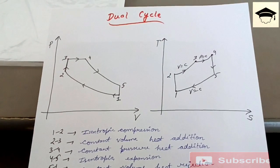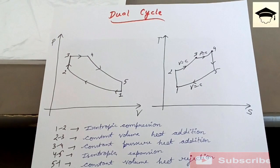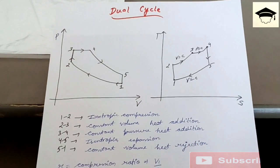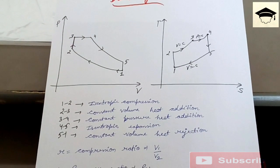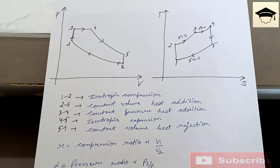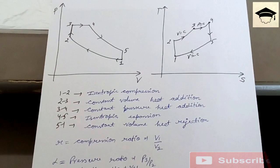From 1 to 2 it is isentropic compression process. From 2 to 3 it is constant volume heat addition. From 3 to 4 it is constant pressure heat addition. From 4 to 5 it is isentropic expansion. From 5 to 1 it is constant volume heat rejection.